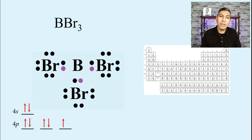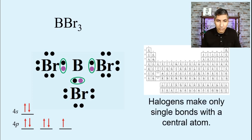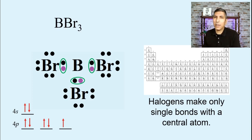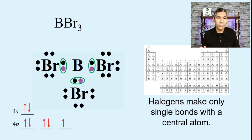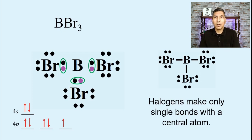So really, there is no way to make every atom in this molecule have an octet. Boron is just going to have to live with six valence electrons. The number of shared pairs here is three. The key rule is that halogens only make single bonds with a central atom. If you feel the urge to put a double bond on a halogen, don't — they only make single bonds. The finished Lewis electron dot diagram for boron tribromide has boron with just six valence electrons, a notable exception to the octet rule.